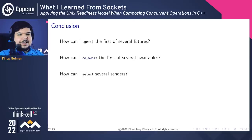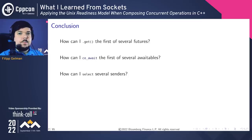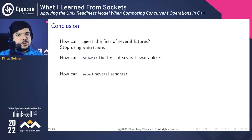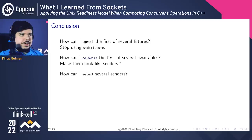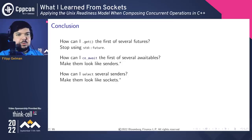Before I get into everything else, I'd like to start with a conclusion. In the summary of my talk, I seized these questions: how do I get the first of several futures? How do I co-await the first of several awaitables? And how can I select several senders? Unfortunately for futures, I don't think std::future is going to let us — I don't see it happening. For awaitables, the first step is to make them all look like senders. And for senders, it's to make them look like sockets. And once we do these things, it becomes possible to wait for several at once.